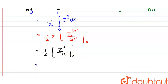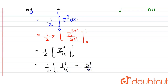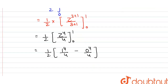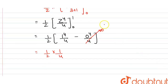Putting in the limits: (1/2) · (1⁴/4 − 0⁴/4). Since 0⁴/4 = 0, we get (1/2) · (1/4) = 1/8. So our final answer is 1/8. Thank you.